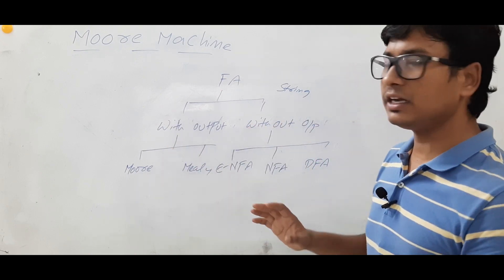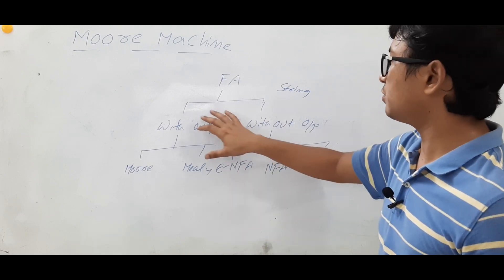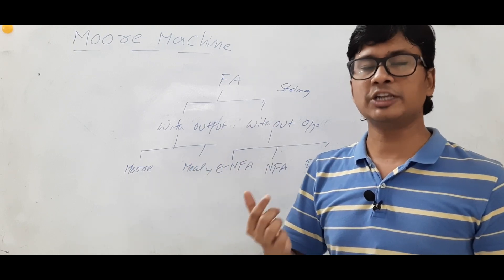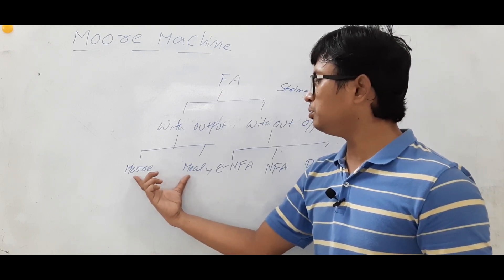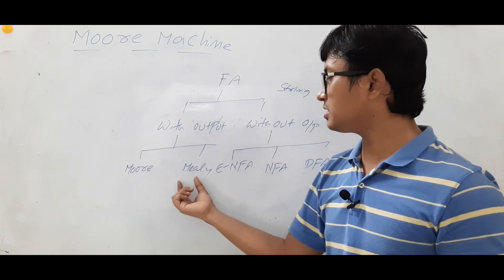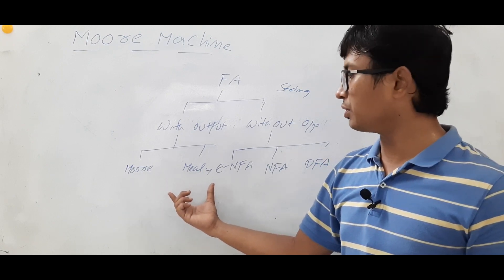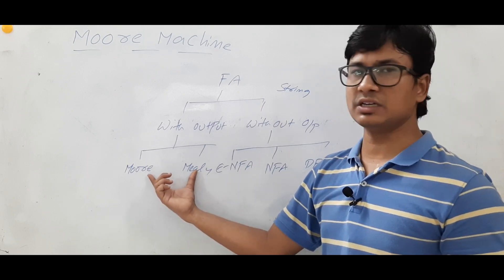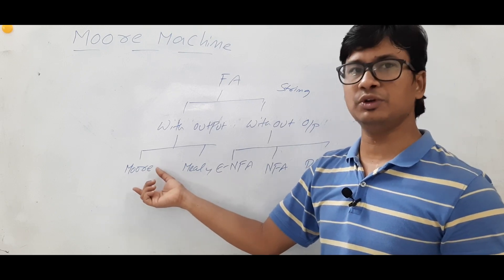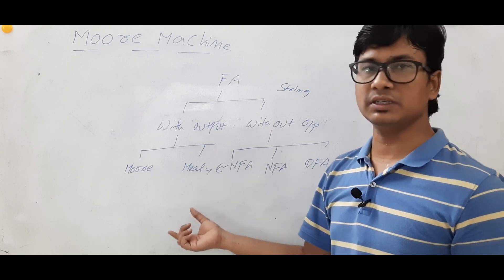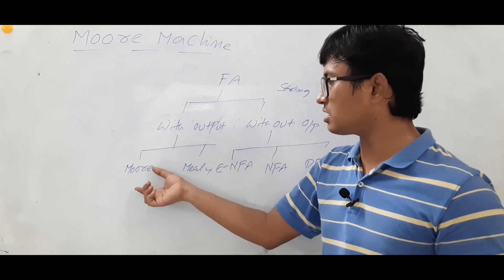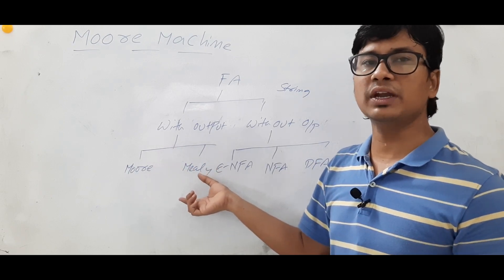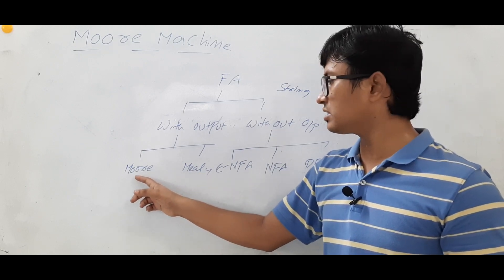Whereas in finite automata with output, if you give a string they will give the corresponding output. Those two machines — Moore machines and Mealy machines — will give you the output. The power of these two machines is also equal; the capability is the same because for a given language we can construct either a Moore machine or a Mealy machine. In the coming videos we will discuss what a Moore machine is, how it is represented, and also how a Mealy machine is represented.